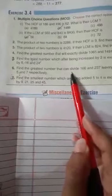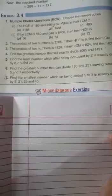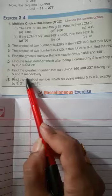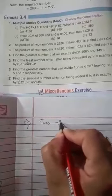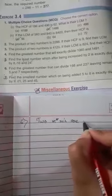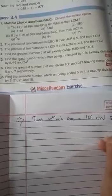Next is the 6th word problem. Find the greatest number that can divide 166 and 237 leaving remainder 5 and 7 respectively. Two numbers are given: 166 and 237.